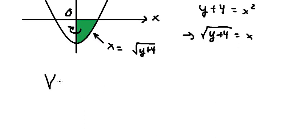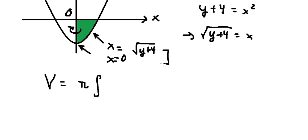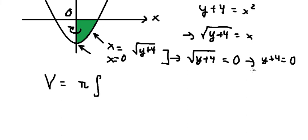Now we can apply the volume formula. We need to find the intersection points. Setting s equal to zero and the square root of y plus four equal to zero, we get y plus four equals zero, so y equals negative four. So the bounds of integration run from negative four to zero.